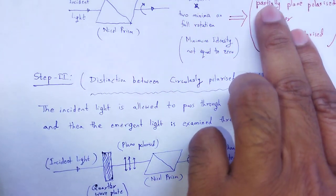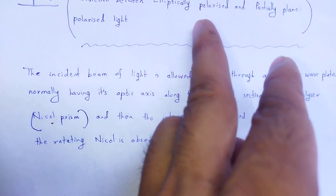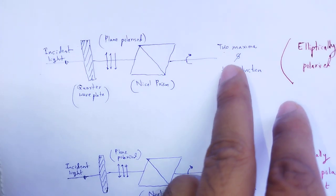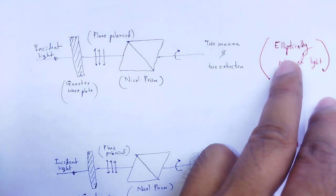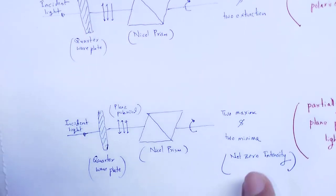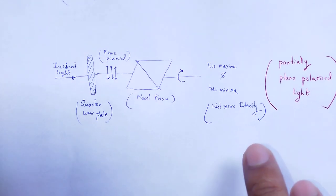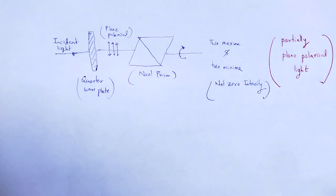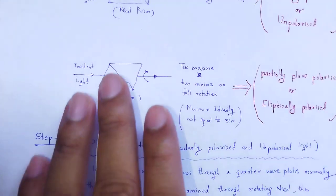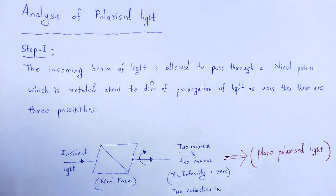The third observation: the distinction between partially plane polarized and elliptically polarized. In step number three, if there is variation in intensity as two maxima and two extinctions with minimum intensity totally zero, then the nature of that light is elliptically polarized. If there is variation as two maxima and two minima but minimum intensity not zero, here with the help of this video lecture, we understand the concept of analysis of polarized light using the Nicol prism as an analyzer.